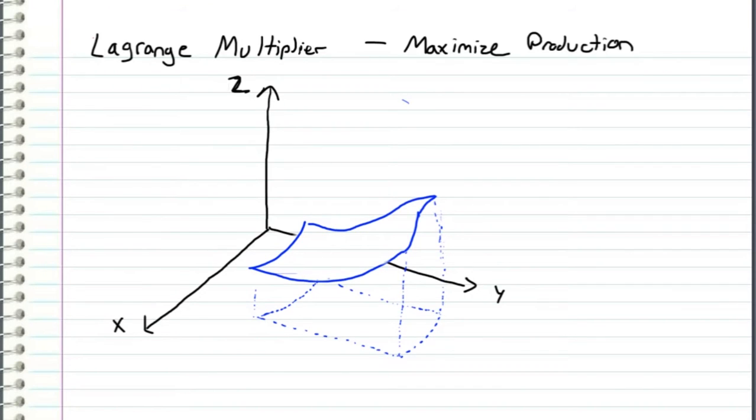In this video I will be covering an example that someone sent in for me to work out, and it has to do with Lagrange multipliers and maximization of production. Before we actually get into the example I want to give a little bit of background on Lagrange multiplier problems just so we can understand exactly what's going on.